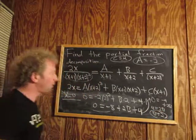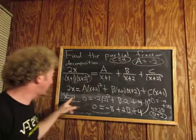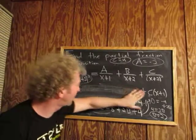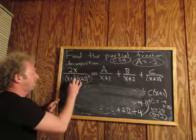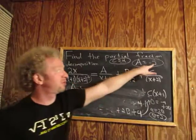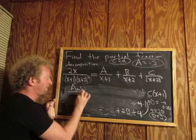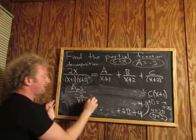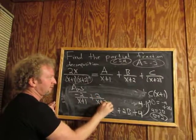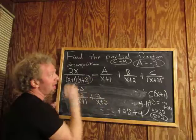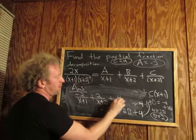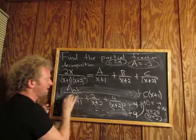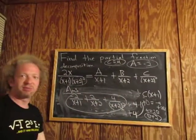Beautiful. So we plugged in values to find all three constants. Now we plug everything back in for the final answer: A = -2, B = 2, C = 4. So the partial fraction decomposition is: -2/(x+1) + 2/(x+2) + 4/(x+2)². That was a medium difficulty problem — hope that makes sense.